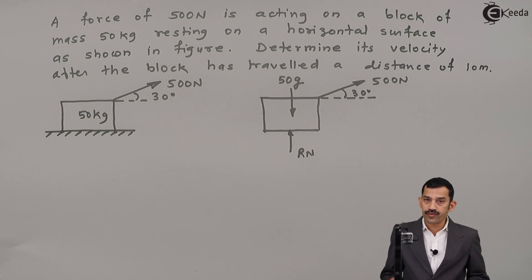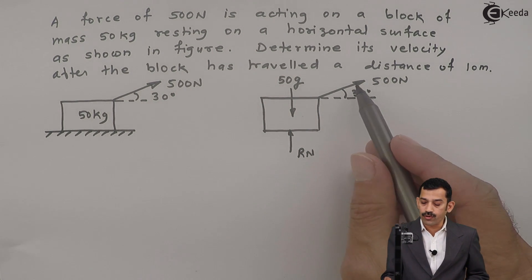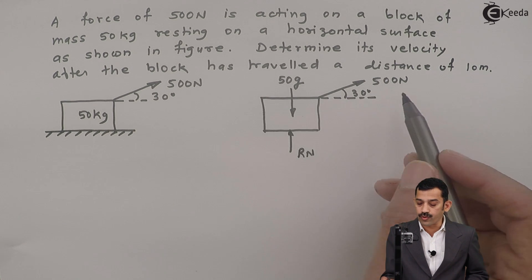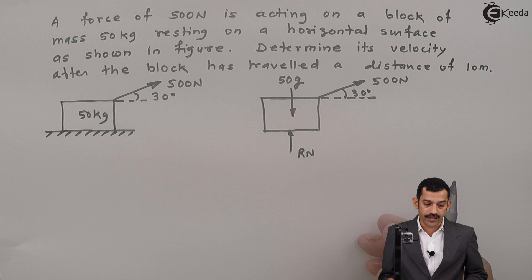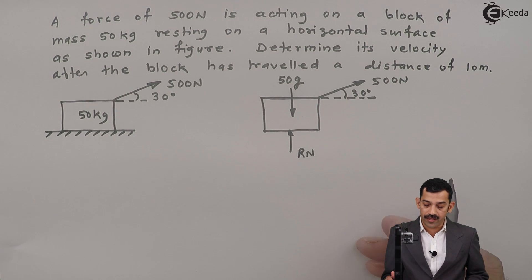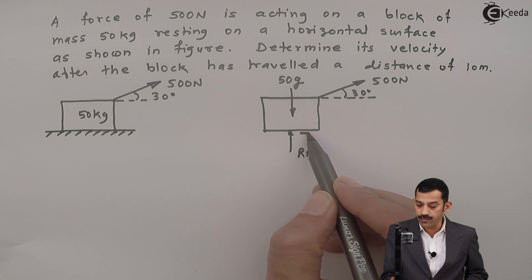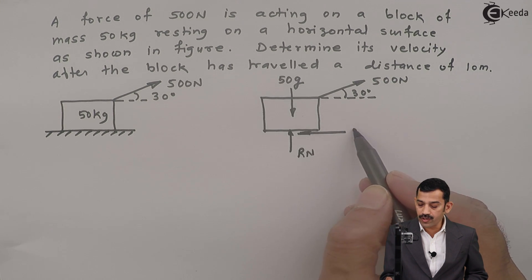As 500 Newton force is acting in rightward direction due to horizontal component of this force, body moves in rightward direction. That means displacement is in rightward direction. Therefore frictional force will get in leftward direction. Mu is 0.5, therefore frictional force is 0.5 Rn.